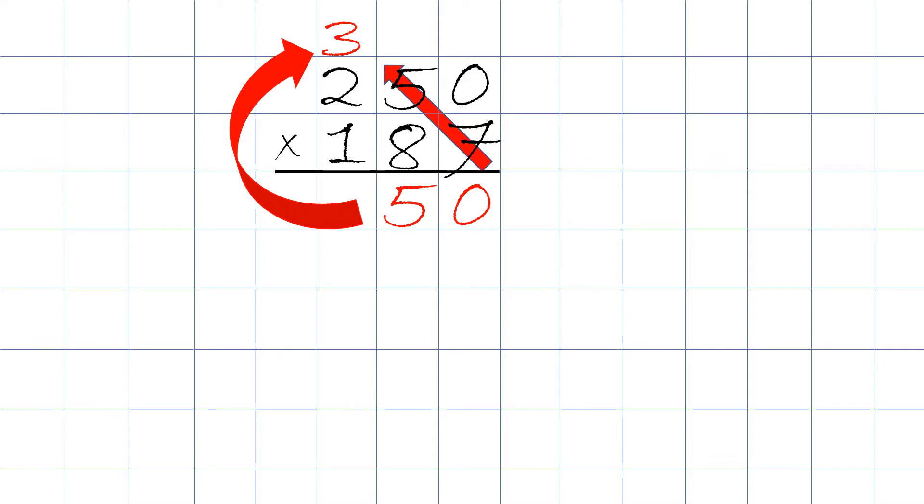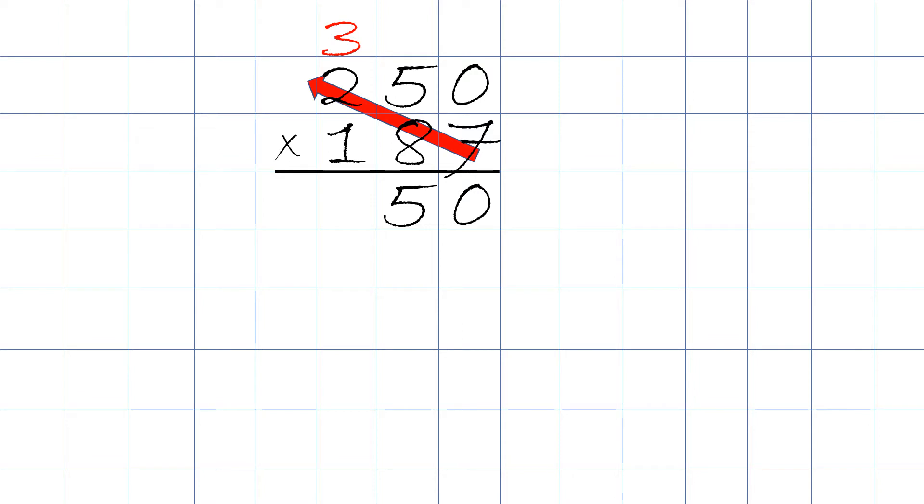Next we take seven times two. That's going to be 14 plus the three on top, and that's going to give us 17. We write both digits right up here.